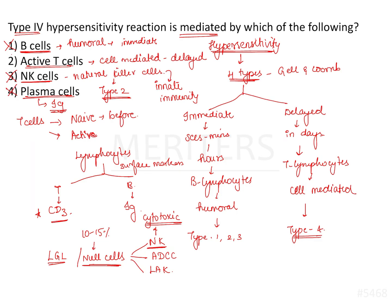Therefore, out of the four given options, the type 4 hypersensitivity reaction — that is, delayed type or cell-mediated hypersensitivity — is mediated by T lymphocytes. Therefore option 2, active T cells, is the right answer.